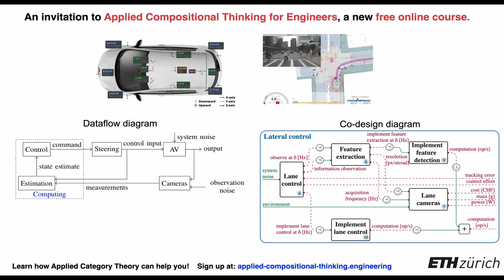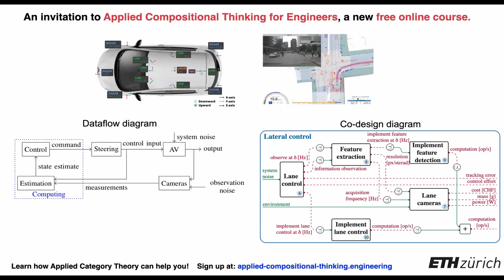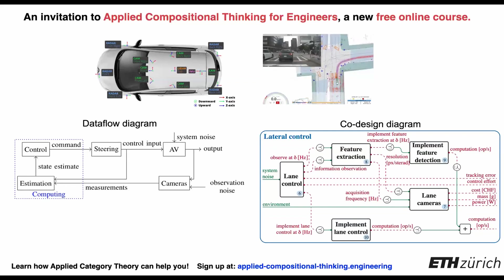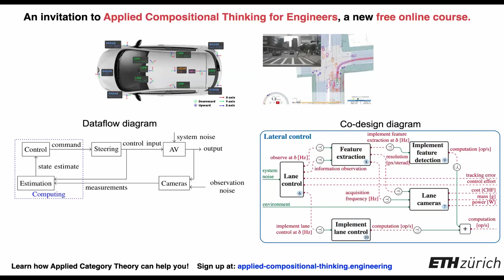The links are the so-called co-design constraints and they can be recursive. Applied Category Theory helps in making these ideas formal and quantitative and guides the optimization of these systems.